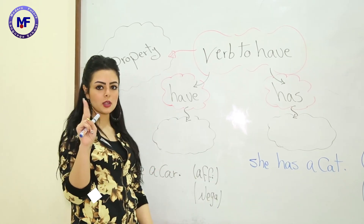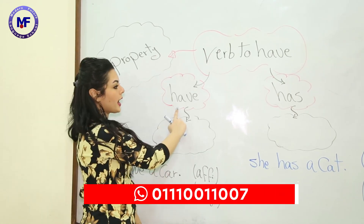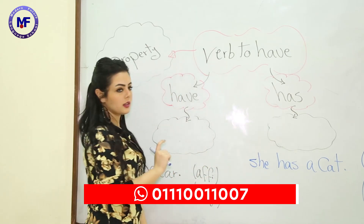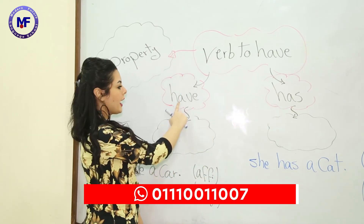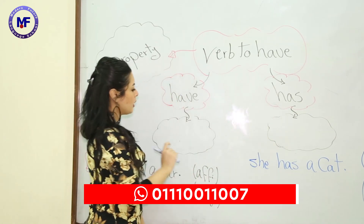We have two types of the verb 'to have': 'have' and 'has'. Again, 'have' and 'has'.